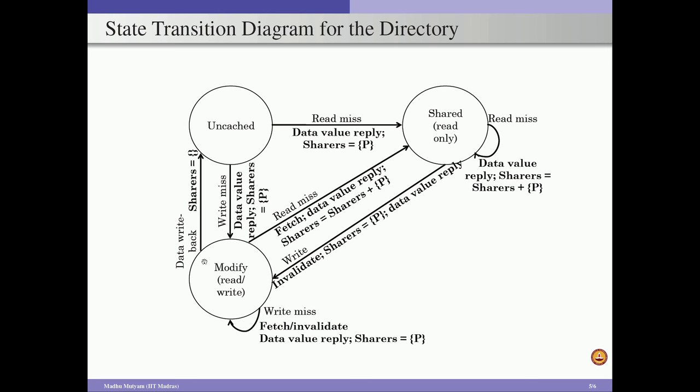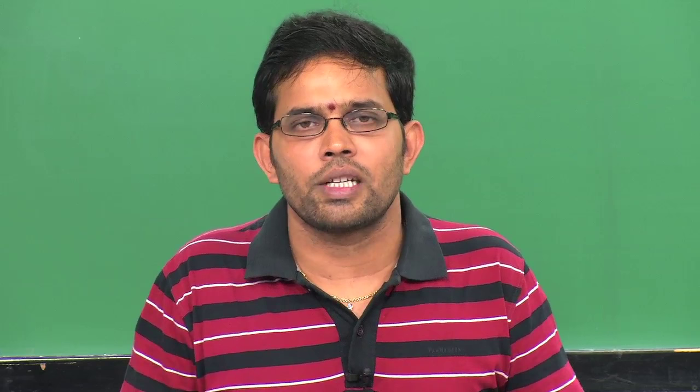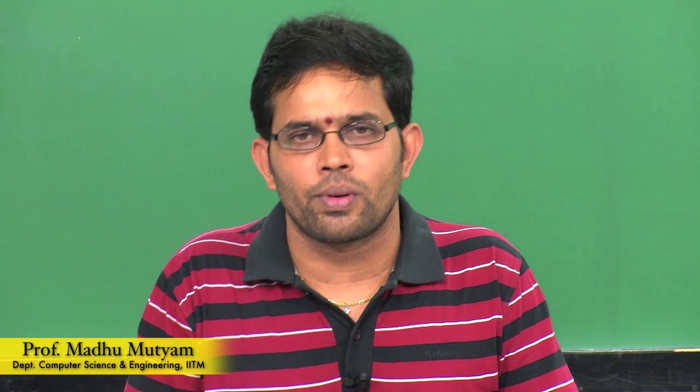In addition to the state transition diagram for directory entries, we also have state transition diagrams for each of the blocks in the private caches. That is why when designing directory-based cache coherency protocols for scalable multi-core systems, we must design the protocol for private cache blocks as well as for blocks in the shared memory or shared cache. With that, this directory-based cache coherency protocol design is completed, concluding this cache coherency protocol design module.